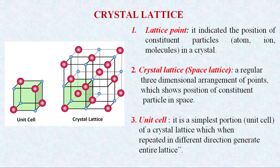So when we want to represent the position of a particle in space, and if I want to draw the structure of the solids on paper, then the position of a particle I will represent by dots on the paper, or represented by points on the paper. So these points are called lattice points.